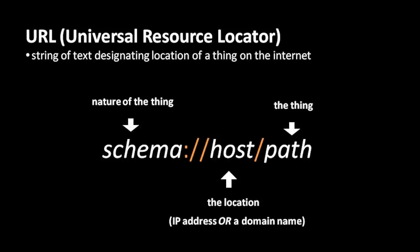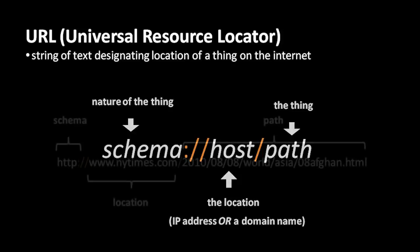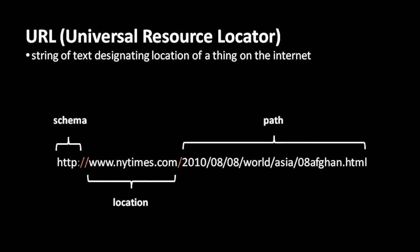A URL — Universal Resource Locator — is a standard way of designating some resource on the internet; it's a piece of text that designates something like a web page. Each URL has three parts: first, the schema, which designates the nature of the thing being referenced; then after a colon and two slashes, the host — the location of the resource specified by an IP address or domain name; and after another slash, the path, which specifies which resource on that host. The schema used for web pages is HTTP.